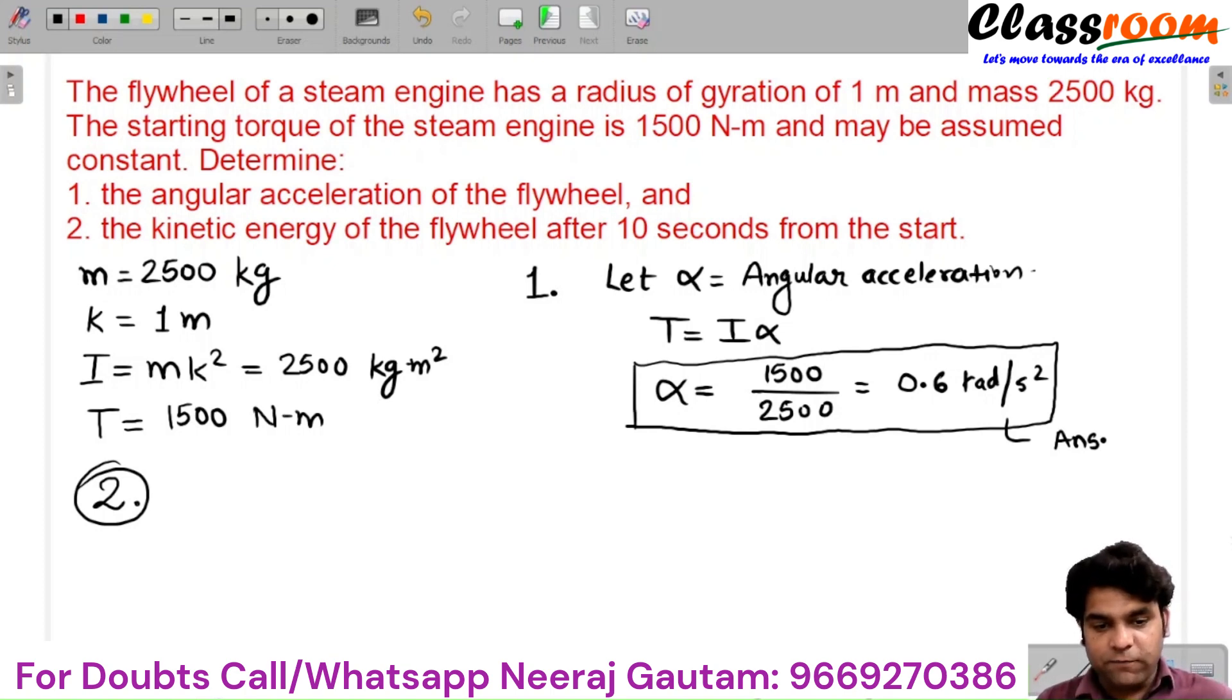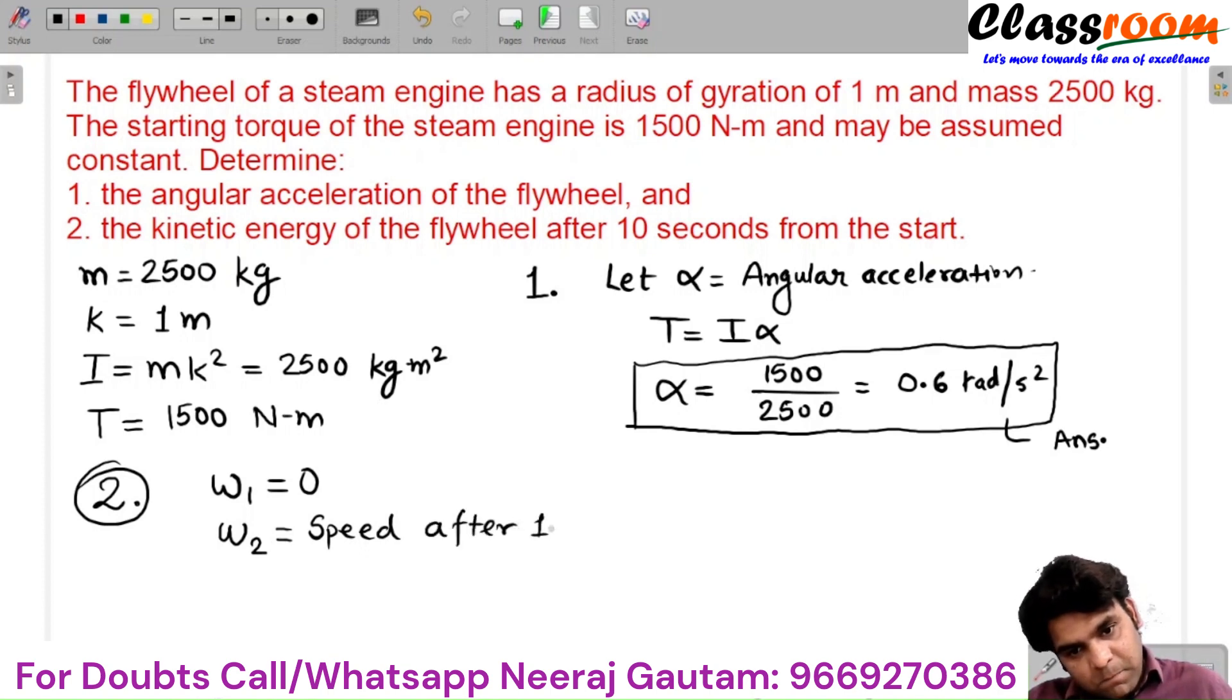The initial speed ω₁ is 0. After 10 seconds, ω₂ is the angular speed after 10 seconds.